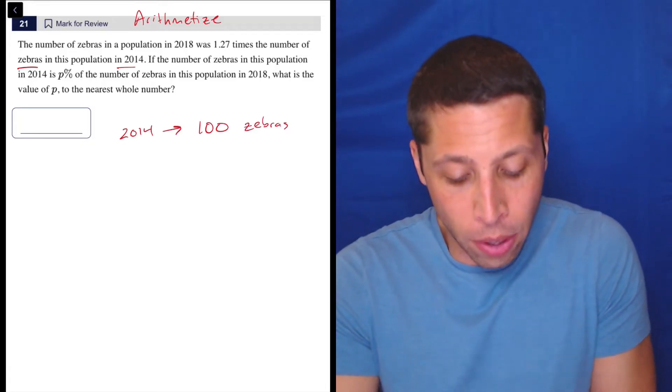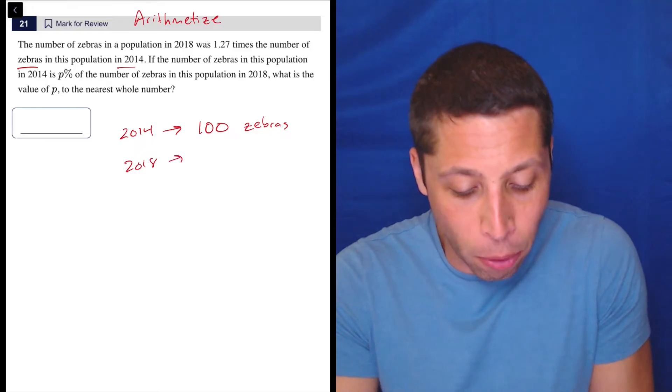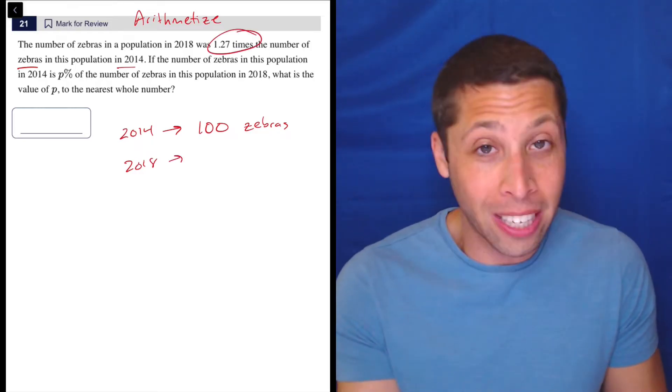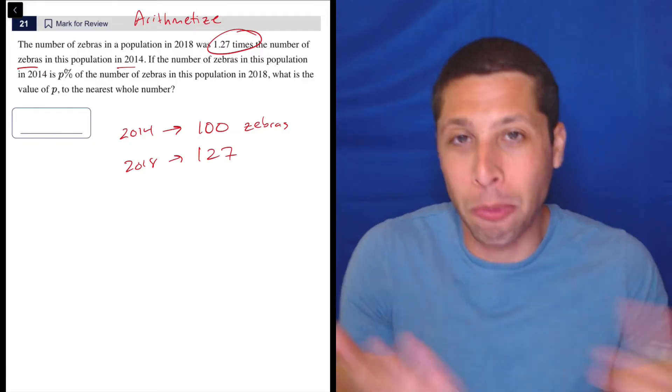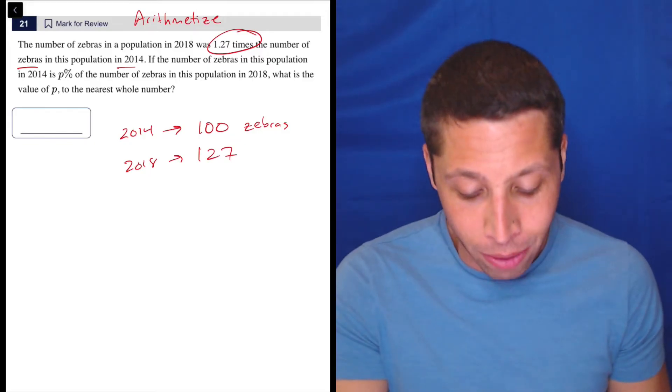Why a hundred? Well, because when we get to 2018 and we multiply that by 1.27, it's really easy. I don't even need the calculator. It's 127, right? 100 times 1.27 is 127.